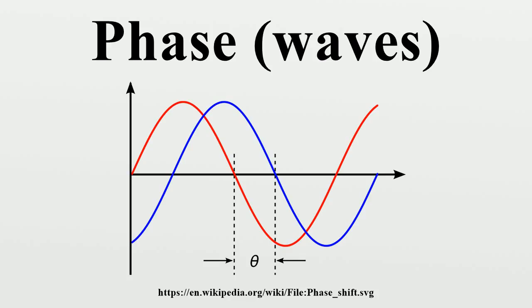Two oscillators that have the same frequency and no phase difference are said to be in phase. Two oscillators that have the same frequency and different phases have a phase difference, and the oscillators are said to be out of phase with each other. The amount by which such oscillators are out of phase can be expressed in degrees from zero to 360 degrees, or in radians from zero to two pi.